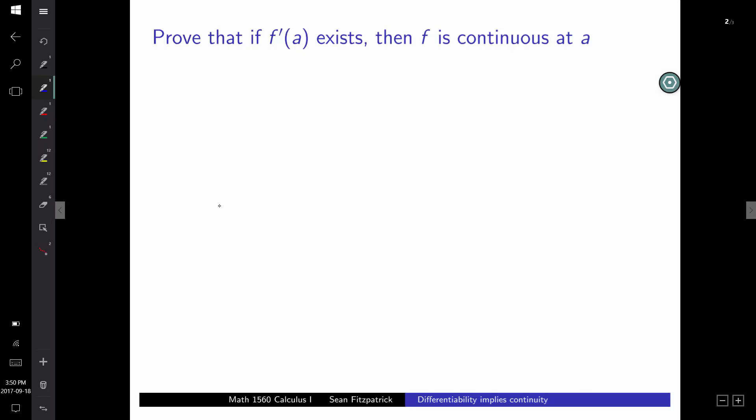So this is an if-then statement, right? If the derivative exists, then the function is continuous. So what do we need to show? Well, what we need to do is there are two steps when you want to tackle an if-then statement. We need to assume the if part. We need to assume our hypothesis. So we assume that the derivative exists.